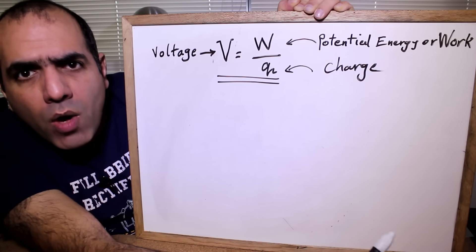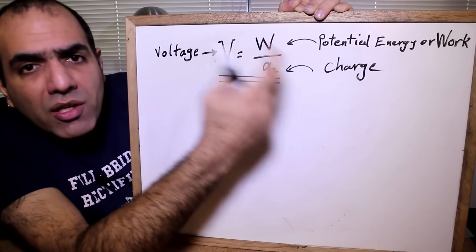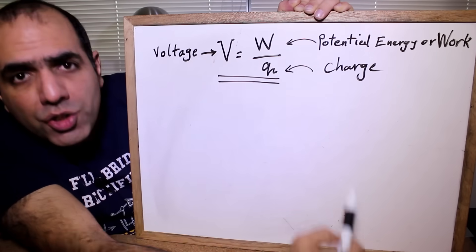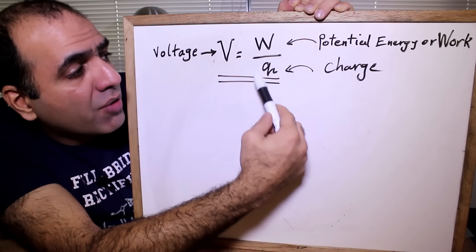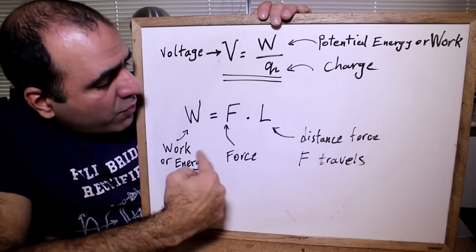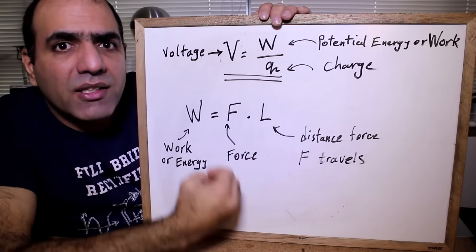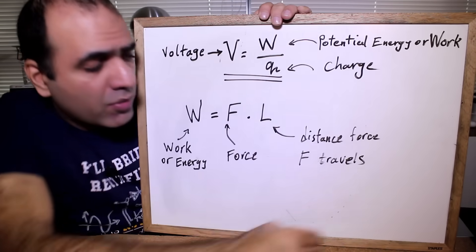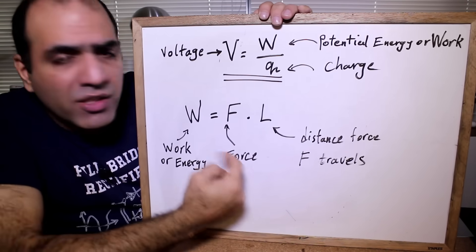If you have watched my ElectroBoom 101, I showed that voltage is basically defined as the amount of potential energy available to move unit charge, or V is equal to the energy acting on charge divided by charge. And of course, work or energy is equal to the force applied to the charge times the distance that the force travels with the charge.